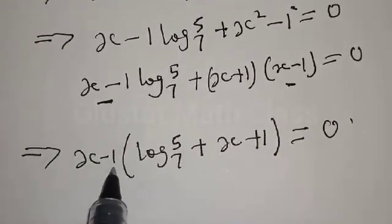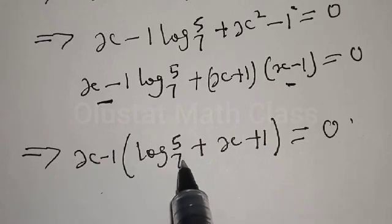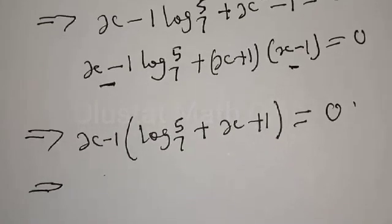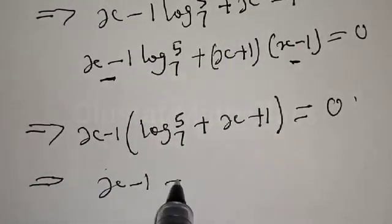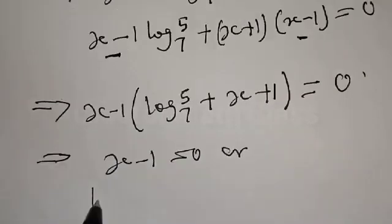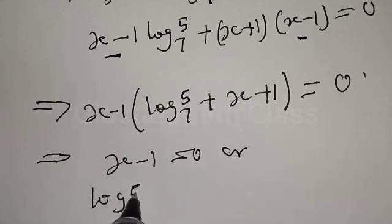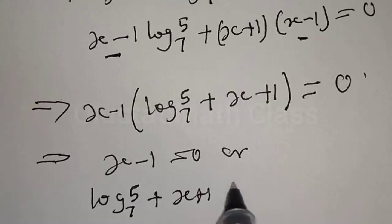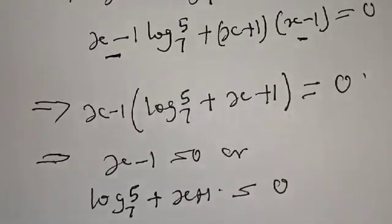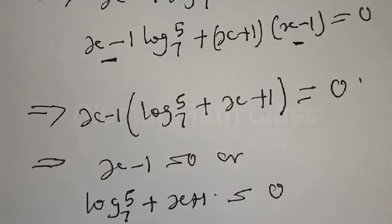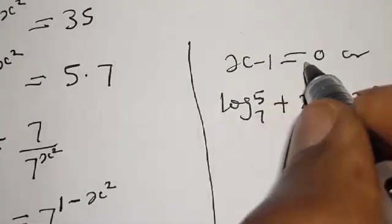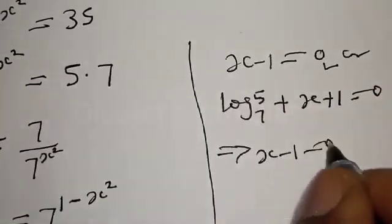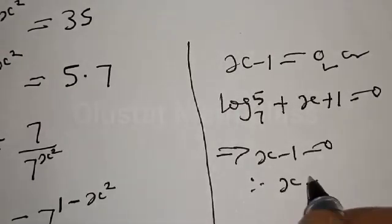From (x minus 1)(log₇5 + x + 1) = 0, we get either x minus 1 = 0 or log₇5 + x + 1 = 0. From x minus 1 = 0, therefore x = 1. This is one of the values of x.